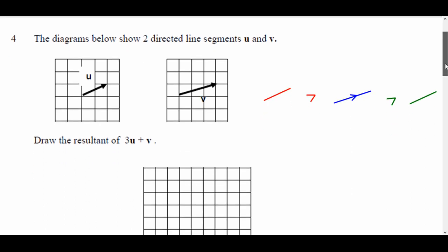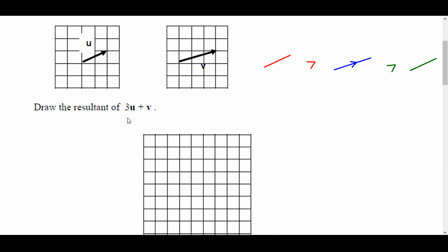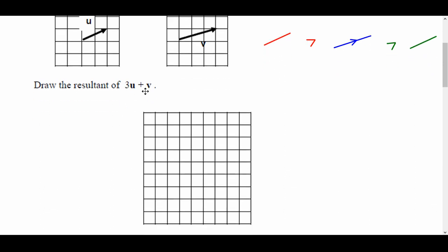Right, let's look at the first one. Question 4: the diagram below shows two direct line segments U and V, draw the resultant of 3U plus V. So we've got to add the vectors together, but before we do that, I've got to times this vector by 3, so I'm going to draw them in this diagram below. So, well let's do that.